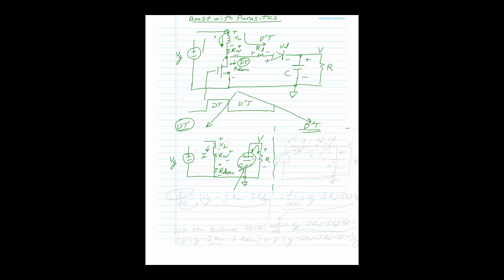For the D'T period, the circuit includes V_G, the inductor, R_W, the diode resistance R_D, the diode itself, the capacitor, and the load resistance.